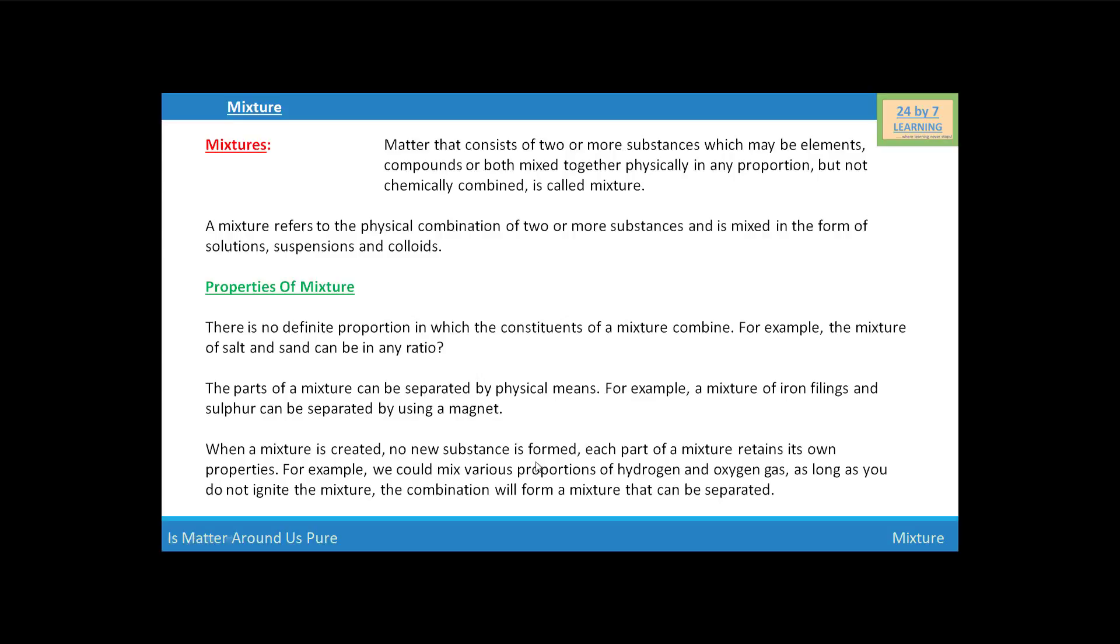When a mixture is created, no new substance is formed. Each part of the mixture retains its own property. For example, we could mix various proportions of hydrogen and oxygen gas. So, as long as you do not ignite the mixture, the combination will form a mixture that can be separated.